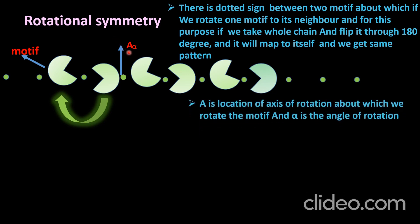The rotational symmetry is denoted as Aα, where A is the location of the axis of rotation and α is the angle of rotation. Here α is 180 degrees — we need to rotate the motif by 180 degrees in order to get the same pattern.